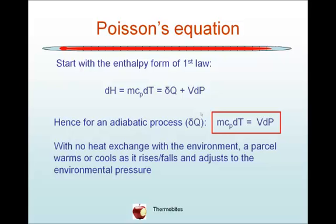Let's start with the enthalpy form of the first law, where dH = mcₚdT = δQ + VdP. Because it's an adiabatic process, δQ = 0, so mcₚdT = VdP.